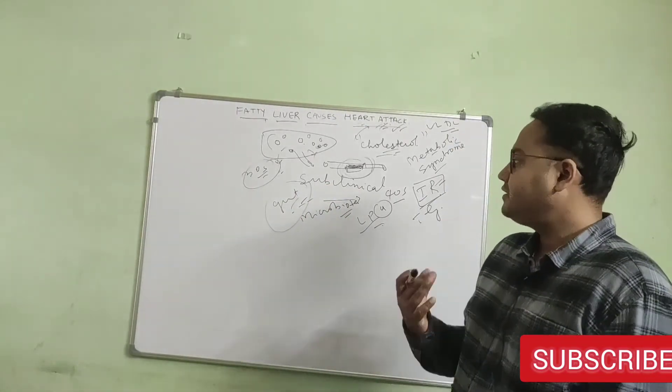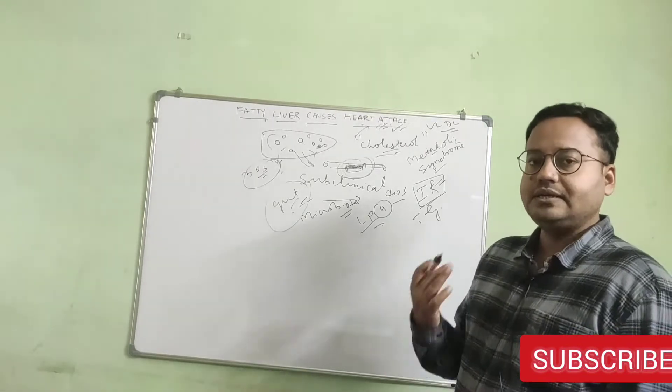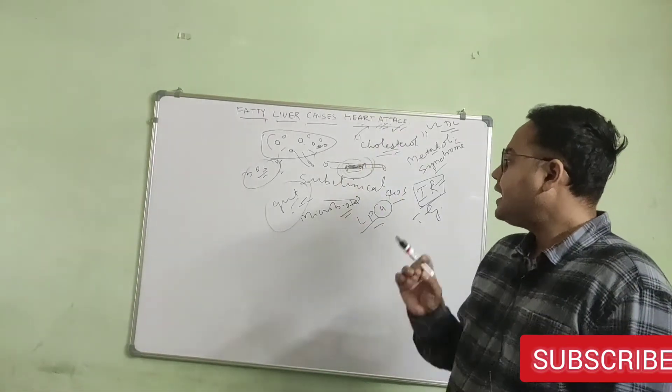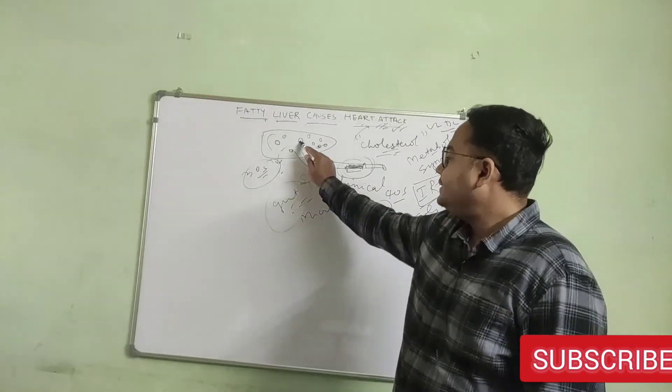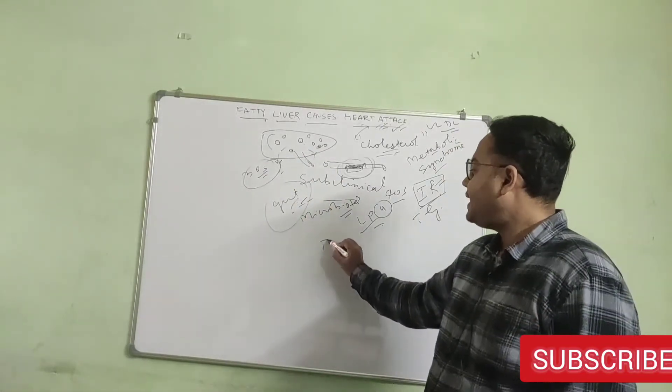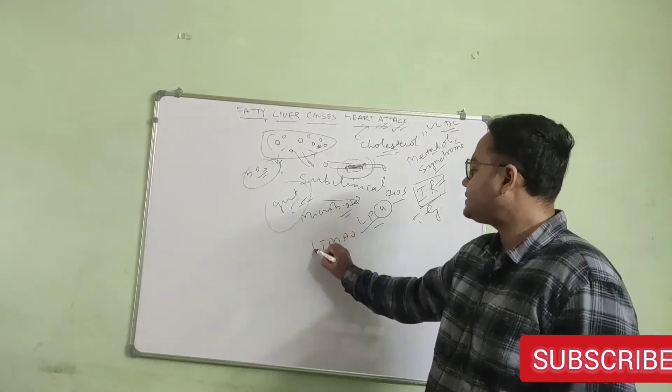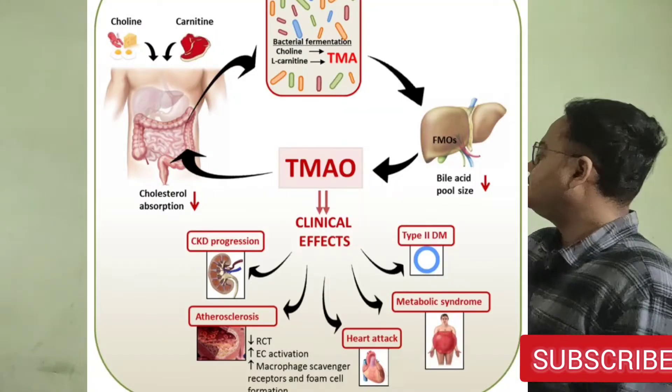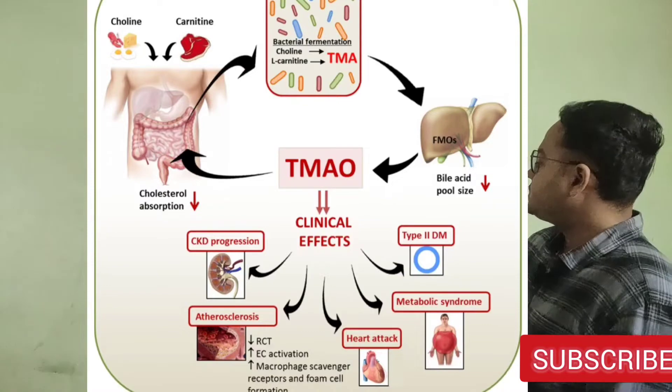And as a result of that, there will be increasing systemic inflammation, causing heart attack. And unhealthy liver and unhealthy gut generate a lot of trimethylamine N-oxide, which is again a contributing factor in the pathogenesis of heart attack.